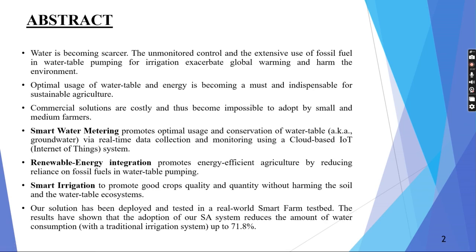Water is becoming scarcer. The uncontrolled and extensive use of fossil fuel in water table pumping for irrigation exacerbates global warming and harms the environment. Optimal usage of water and energy is becoming indispensable for sustainable agriculture. Commercial solutions are costly and impossible to adopt for small and medium farmers. Smart water metering promotes optimal usage via real-time data collection using a cloud-based IoT system. Renewable energy integration reduces reliance on fossil fuels. Smart irrigation promotes good quality crops without harming the soil and water table ecosystem. Results show water consumption reduced by up to 71.8%.